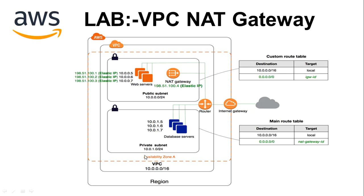Here we will create a VPC. After creating the VPC, we will create two subnets. We will create a public subnet, and we will also create one private subnet.